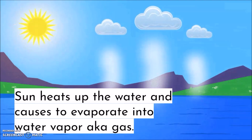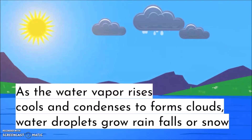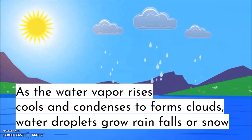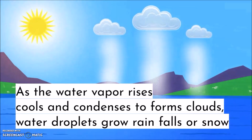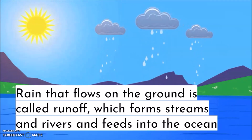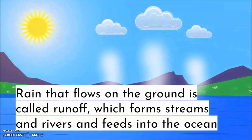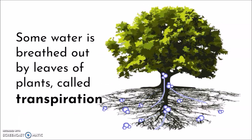As water vapor rises in the atmosphere, it cools and condenses to form clouds. As water droplets grow, this is when we have rain or snowfall. Rain that flows on the ground is called runoff, which forms streams and rivers and will eventually feed back into the ocean. Another way that water will enter the atmosphere is through transpiration — water breathed out by leaves of plants.